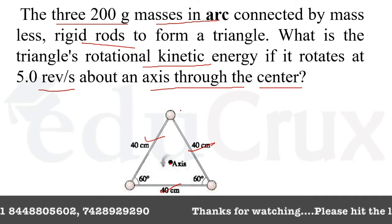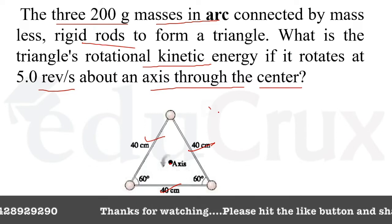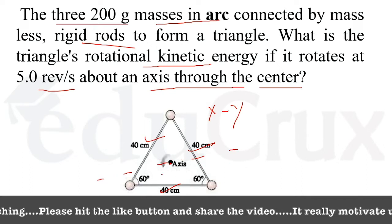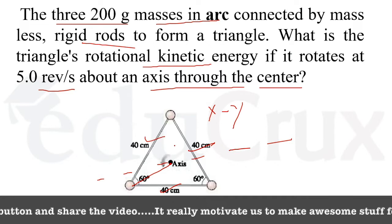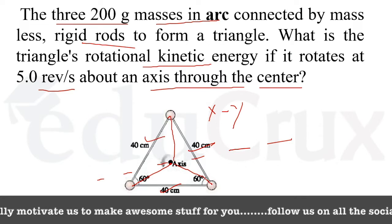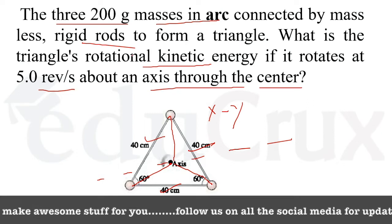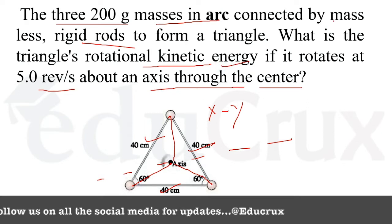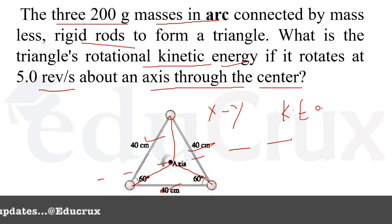This is the axis - if this triangle is in the xy plane and this axis is in the z plane. Now, as these rods are massless but these three masses have mass, there will be rotational kinetic energy involved for these three masses. The formula for kinetic energy is half I omega squared.